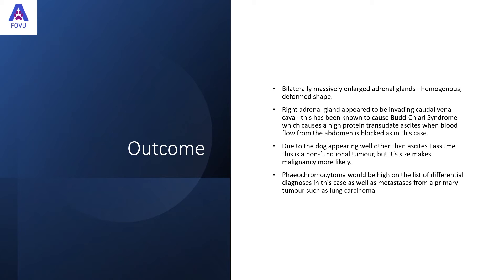In this case, we found bilaterally massively enlarged adrenal glands. They were homogenous but had a deformed shape. The right adrenal appeared to be invading the caudal vena cava, which has been known to cause Budd-Chiari syndrome — causing a high-protein transudate ascites because blood flow from the abdomen is blocked. This was what was occurring in this case. Due to the dog appearing well other than the ascites, it was assumed the tumour was non-functional, but the size made malignancy more likely.